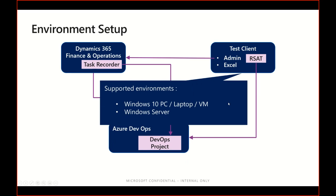For the test client, we can use basically any Windows 10 PC — it might be your laptop or a virtual machine. If you think about regularly executing your test suites, you should use a dedicated VM, which can be Windows 10 or Windows Server. For test purposes, you could also install the Regression Suite Automation Tool on your tier one environment and connect to the same environment, but that's only possible if you have admin rights on the tier one, limiting this to cloud-hosted environments. For more details, I refer you to our earlier session.